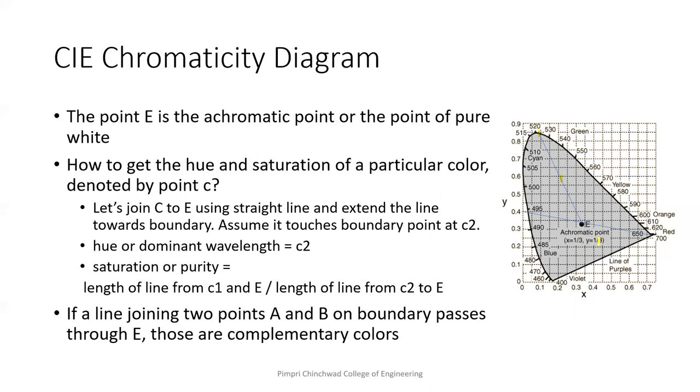Now, if a line joining two points A and B on boundary, they are on boundary points and they are passing through the achromatic point or the E point, what can I say? These colors are the complementary colors. If I add this color and this color, I will get the white color.